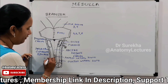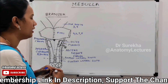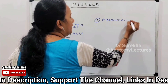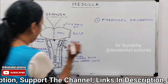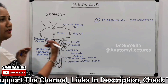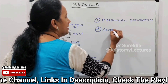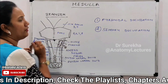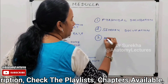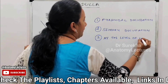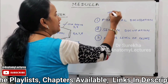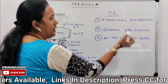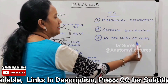The first level is at the level of the pyramidal decussation, where there is crossing over of the corticospinal tract fibers. The second section is at the level of the sensory decussation, at the lower limit of the olives. The third section is at the level of the olives — the olivary nucleus. So we are taking three transverse sections: lower level at pyramidal decussation, middle at sensory decussation, and upper at the level of the olives.